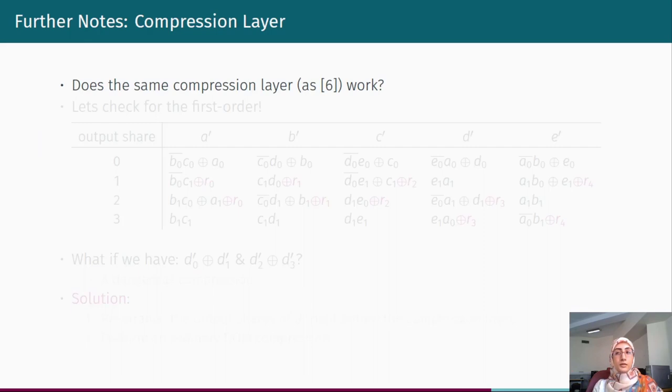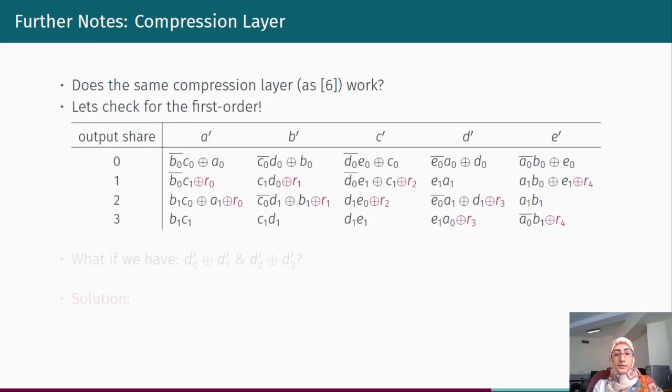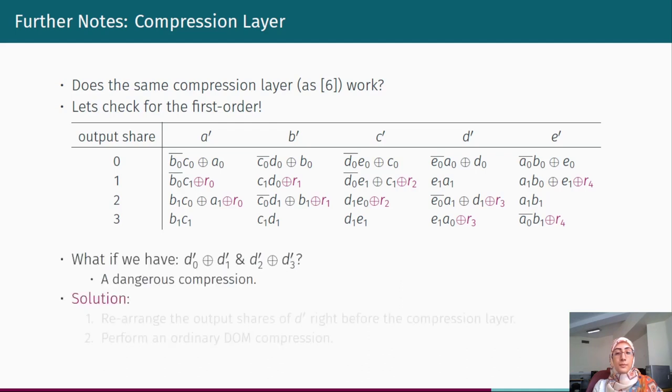However, the compression layer differs in some detail. Let's suppose that we have the first order realization into which the random bits are applied. According to the rule of compression in DOM scheme, output shares 0 and 1 and output shares 2 and 3 are allowed to be summed down. This instruction works for all output bits except for d prime that results in a dangerous and invalid compression. So we have to rearrange the output shares of d prime right before the compression layer and, of course, after the application of theta. And after that, we can perform an ordinary DOM compression safely.